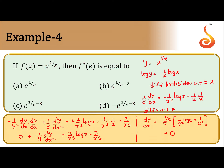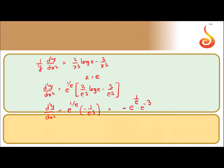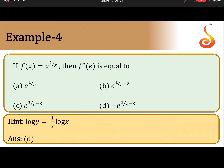Equal to 2 by x cube log x — the derivative of minus 1 by x square gives plus 2 by x cube — minus 1 by x square remains, derivative of log x is 1 by x, and derivative of 1 by x square is minus 2 by x cube. When x is equal to e, dy by dx becomes 0. Substituting this, d²y by dx² equals minus times e to the power 1 by e into e to the power minus 3.